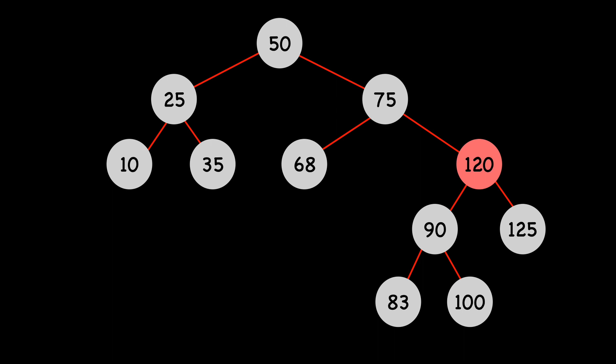This node has both a left and a right child, so we need to find its in-order successor. That is, the node in the tree with the smallest value that is greater than 120. You can see that this is 125. So we move 125 in the place of 120.